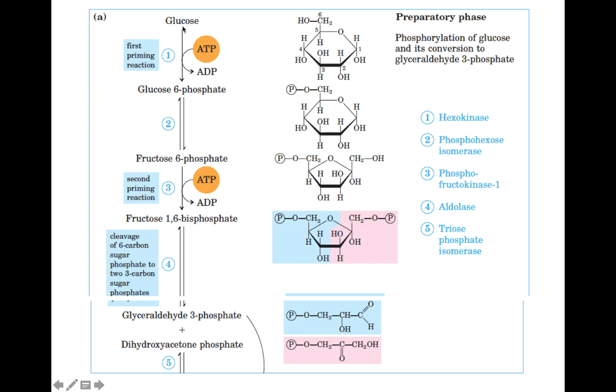Glucose पहले step में phosphorylate होके glucose 6-phosphate बनाता है। ये जितने भी steps आप देख रहे हैं screen पे इसमें हर arrow पे एक number given है - 1, 2, 3, 4, 5 and so on. और यहाँ पे इनकी keys given है कि कौन सा reaction कौन सा enzyme mediate कर रहे है। For example step number one when glucose is converted to glucose 6-phosphate तो ये reaction hexokinase enzyme mediate करता है।